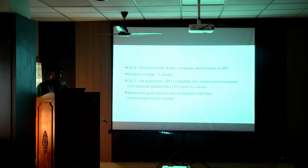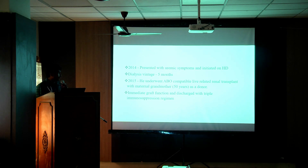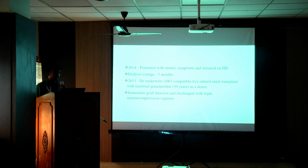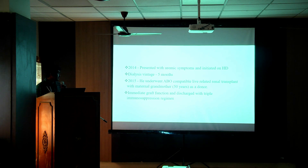A brief history of pre-transplant events: in 2014, he presented with uremic symptoms and was initiated on hemodialysis. He had a dialysis vintage of 5 months, and in 2015, he underwent ABO compatible live related renal transplant with maternal grandmother as donor. He had immediate graft function and was discharged on a triple immunosuppression regimen.